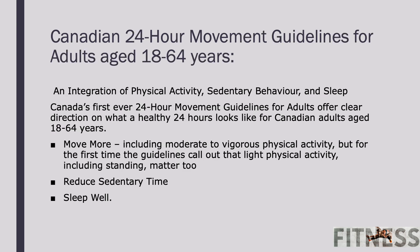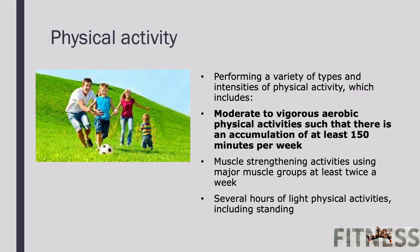Health Canada has designed 24-hour movement guidelines for adults aged 18 to 64. They include moving more, including moderate to vigorous activity, but for the first time, the guidelines call out that light physical activity also matters. We want to reduce sedentary time and sleep well. The physical activity guidelines include performing a variety of intensities: moderate to vigorous aerobic physical activities to accumulate at least 150 minutes per week, muscle strengthening activities using major muscle groups at least twice a week, and several hours of light physical activities including standing.